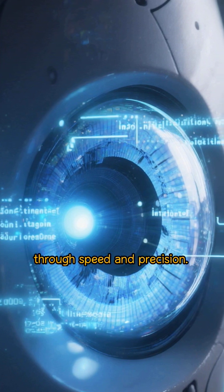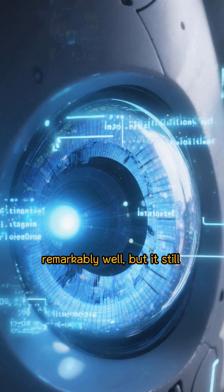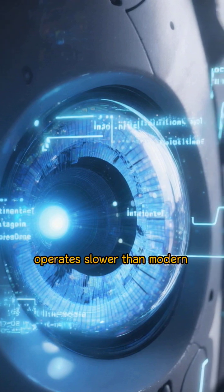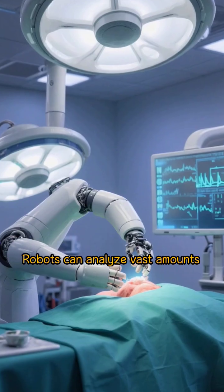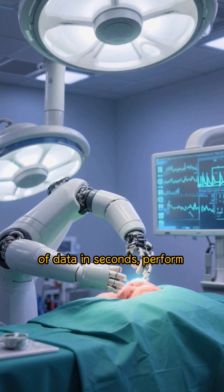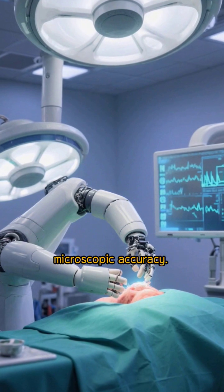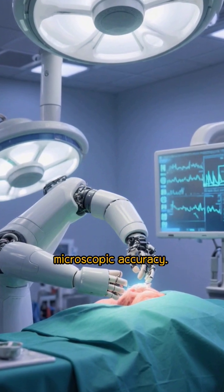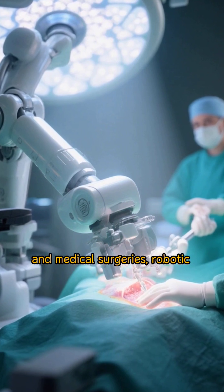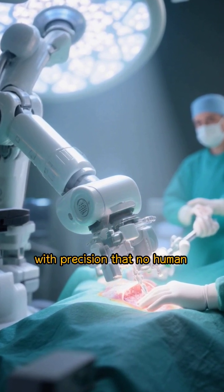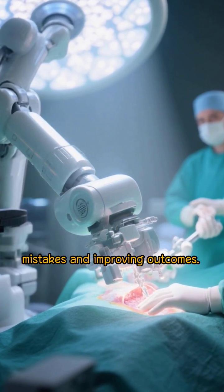Firstly, robots outsmart humans through speed and precision. A human brain processes information remarkably well, but it still operates slower than modern AI processors. Robots can analyze vast amounts of data in seconds, perform complex calculations without error, and execute tasks with microscopic accuracy. For instance, in manufacturing and medical surgeries, robotic systems perform operations with precision that no human hand could match, minimizing mistakes and improving outcomes.